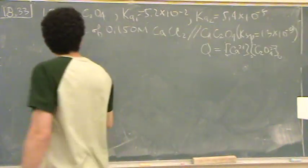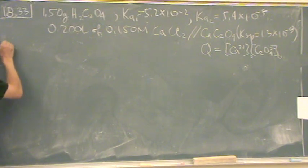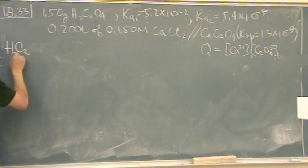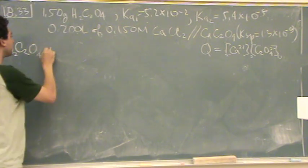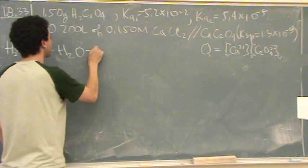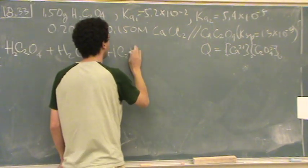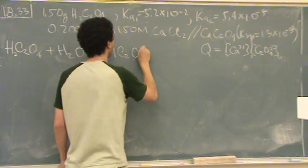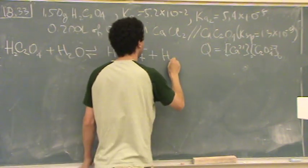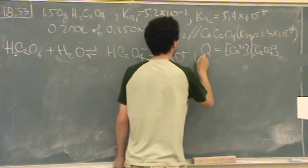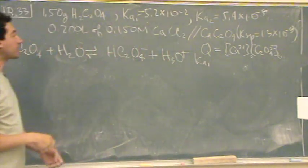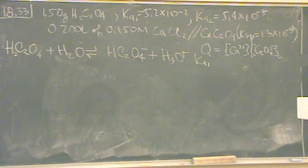Once we get that concentration, then we're doing a will it precipitate question. It's those two combined, that's why it's painful. So what you need to do is, we're going to do a polyprotic question first. There's a reaction, it has a particular K1 that's given in the problem.